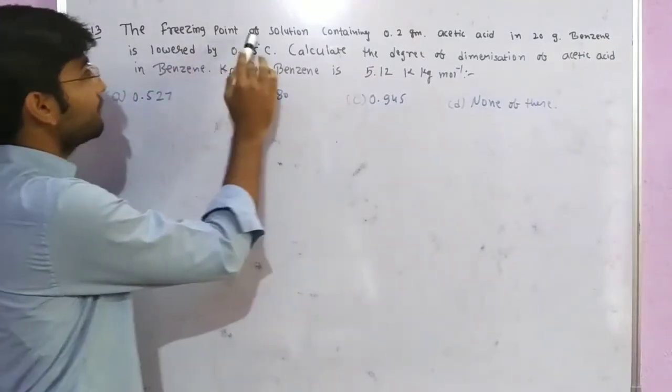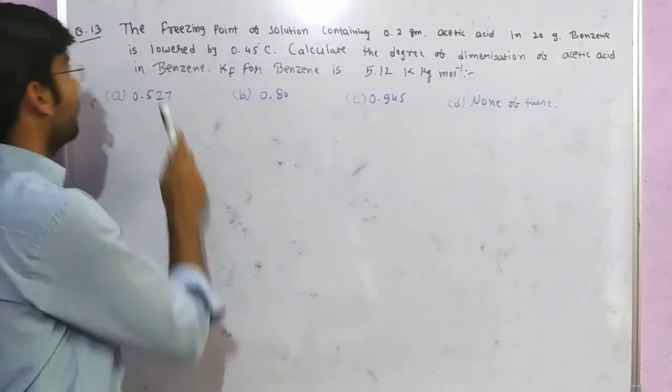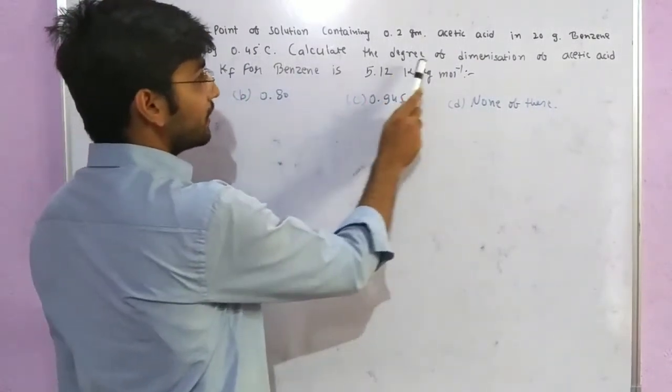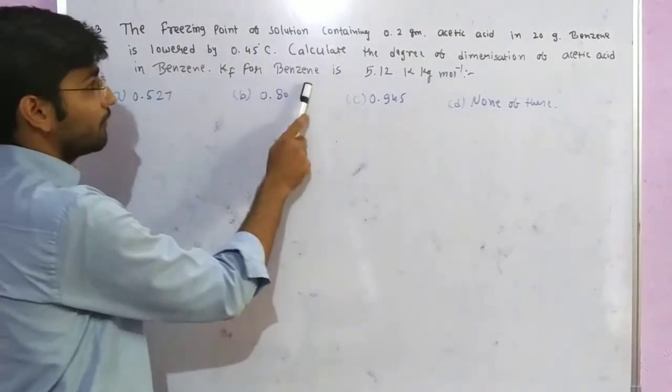Here is a question: The freezing point of solution containing 0.2 gram acetic acid in 20 gram benzene is lowered by 0.45 degrees Celsius. Calculate the degree of dimerization of acetic acid in benzene. Kf for benzene is 5.12 kilogram per mole inverse.